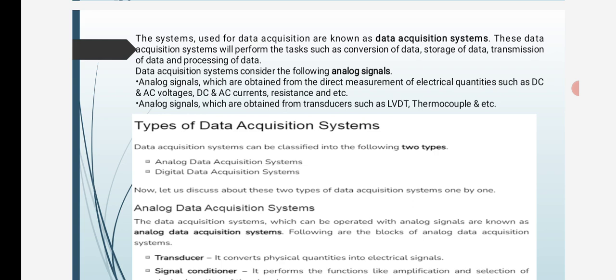Data acquisition systems consider the following analog signals: analog signals obtained from the direct measurement of electrical quantities such as DC and AC voltage, DC and AC current, resistance, etc.